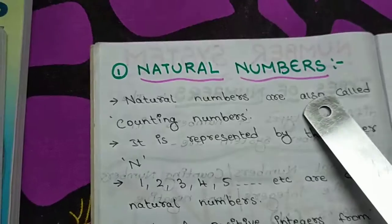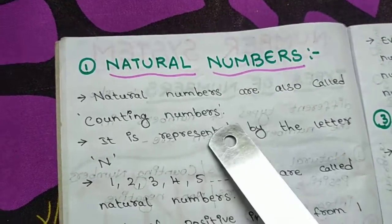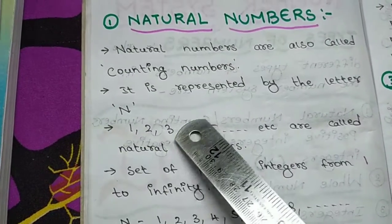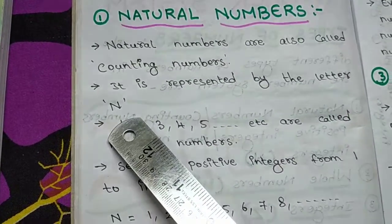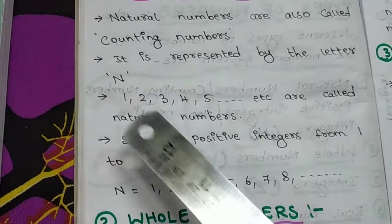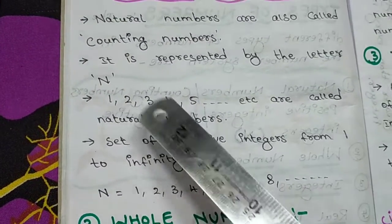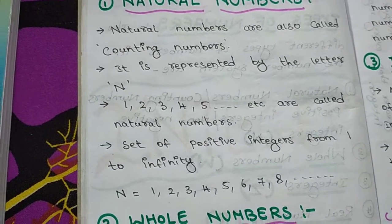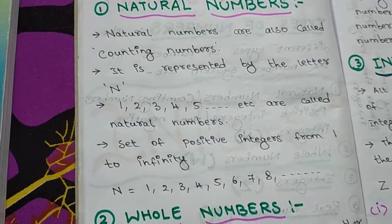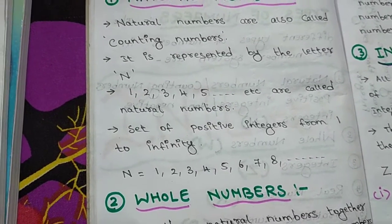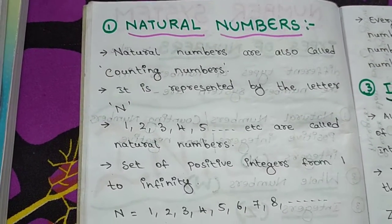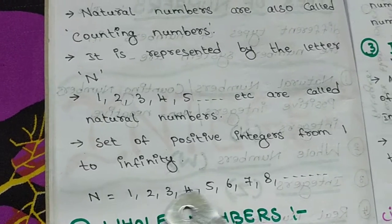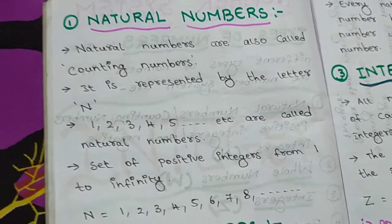Let's see natural numbers. What are natural numbers? Natural numbers are also called counting numbers. They are represented by the letter capital N. So N equals 1, 2, 3, 4, 5, and so on — infinite, till however many numbers there are. All those are natural numbers, also called counting numbers, represented by the letter N.